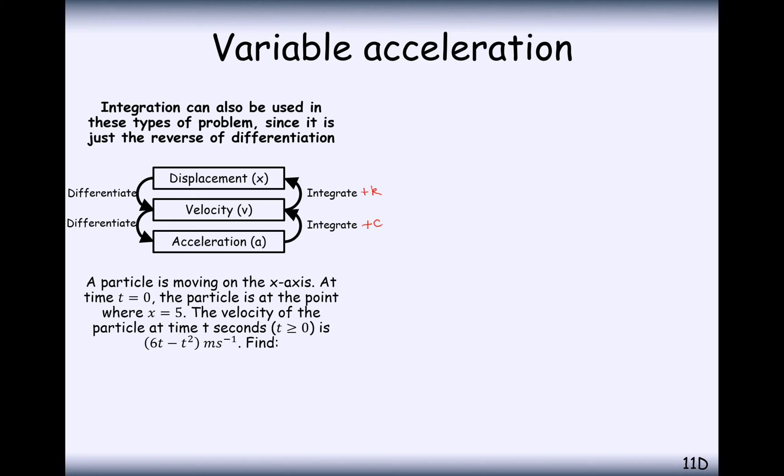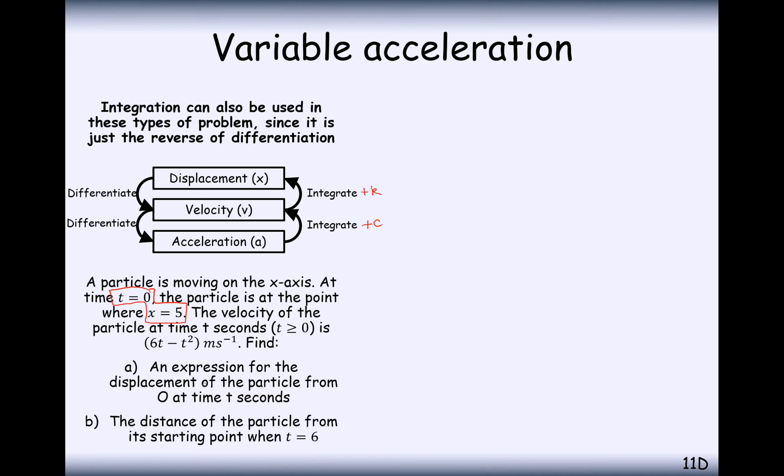Let's have a look at a question. A particle is moving along the x-axis. At time t, the particle is at a point where x equals 5. This is the piece of information that's going to help us find out what the constant of integration is. The velocity of the particle at time t is equal to 6t minus t squared. The question is, find an expression for displacement from O as a function of time, and the distance of the particle from its starting point at 6 seconds.